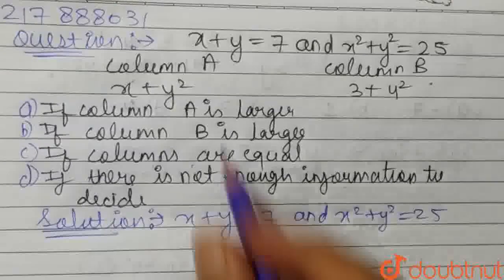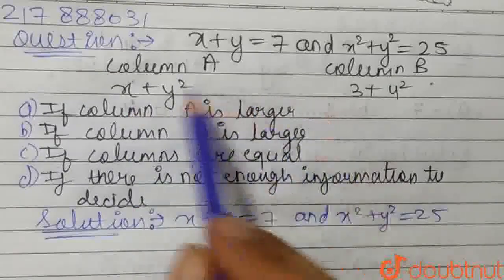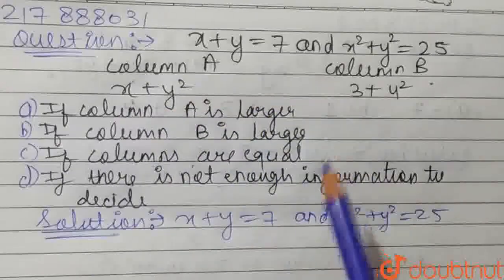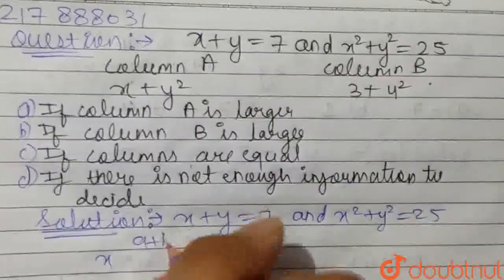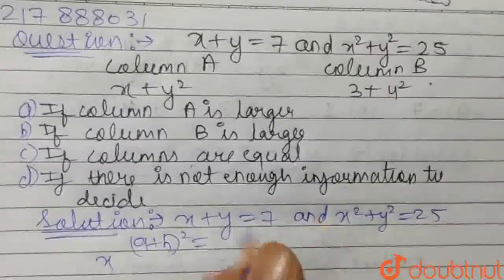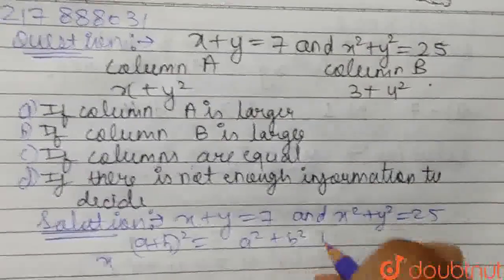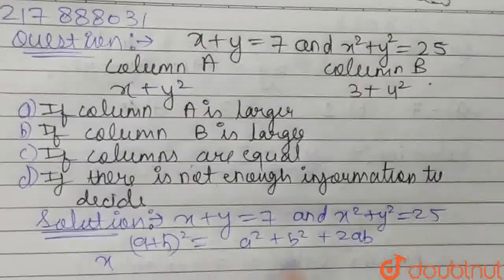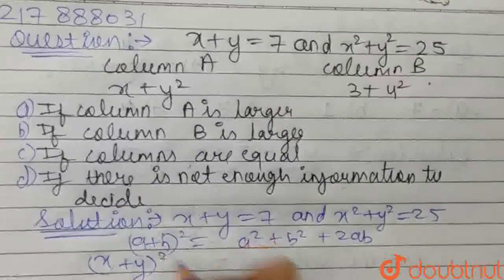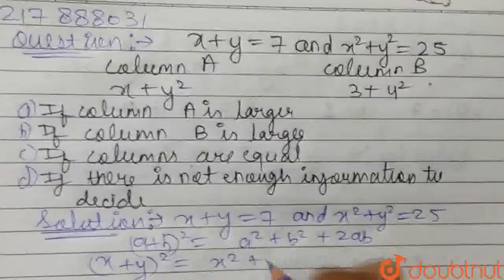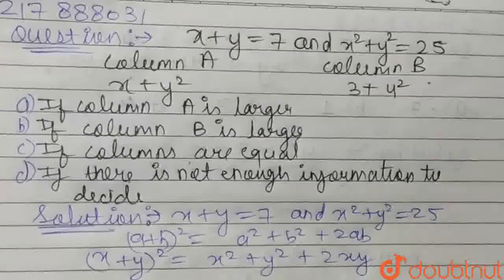For deciding which one of the options is correct, we first need to find the value of x and y so that we can compare both Column A and Column B. We know that the identity of (a+b)² is a² plus b² plus 2ab. We are using this identity here, that is (x+y)² equals x² plus y² plus 2xy.